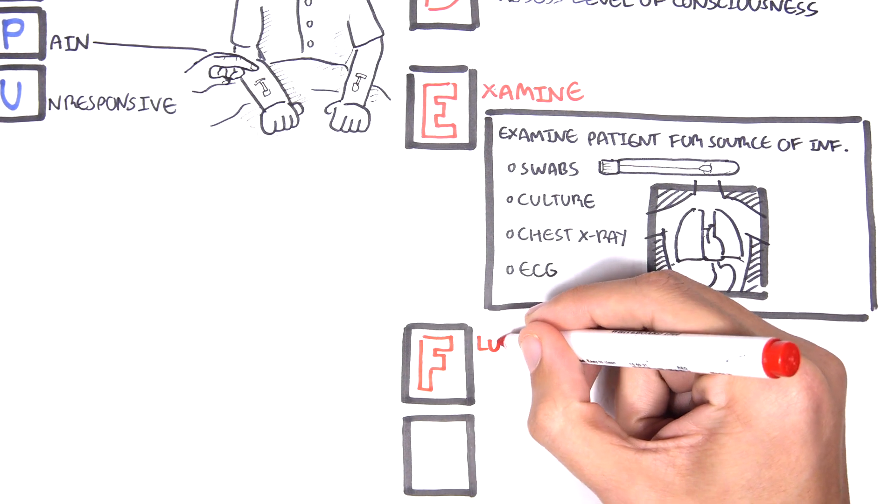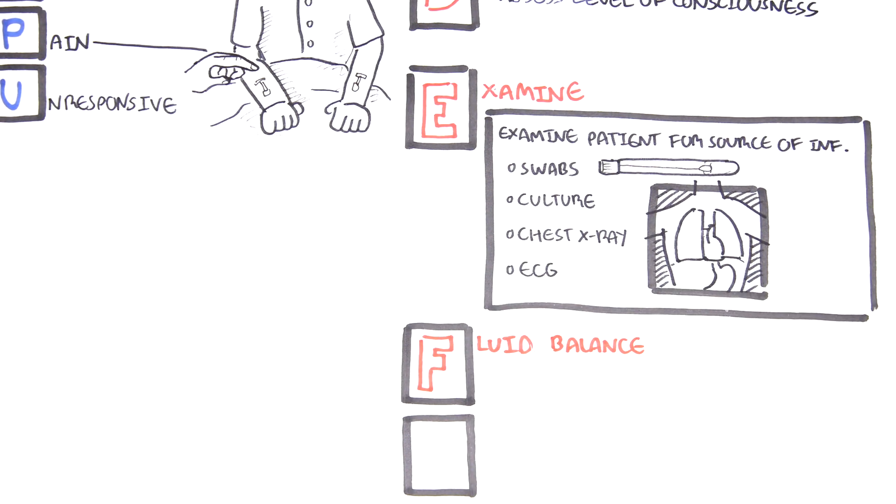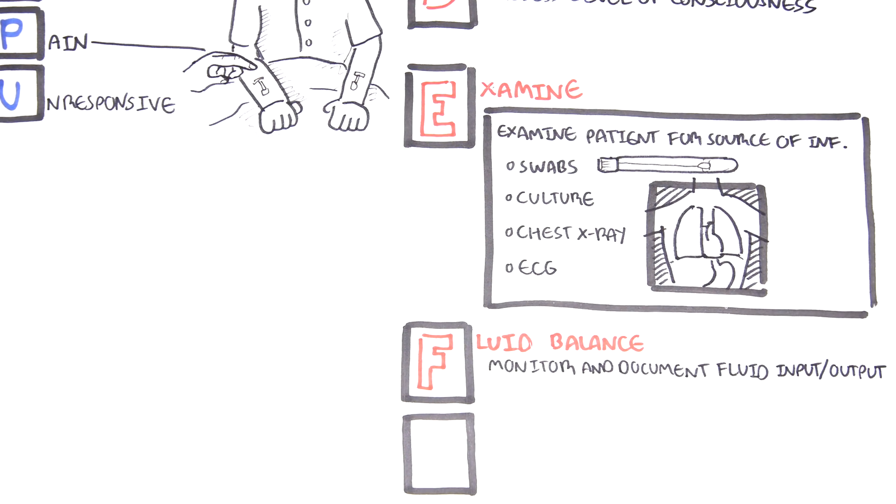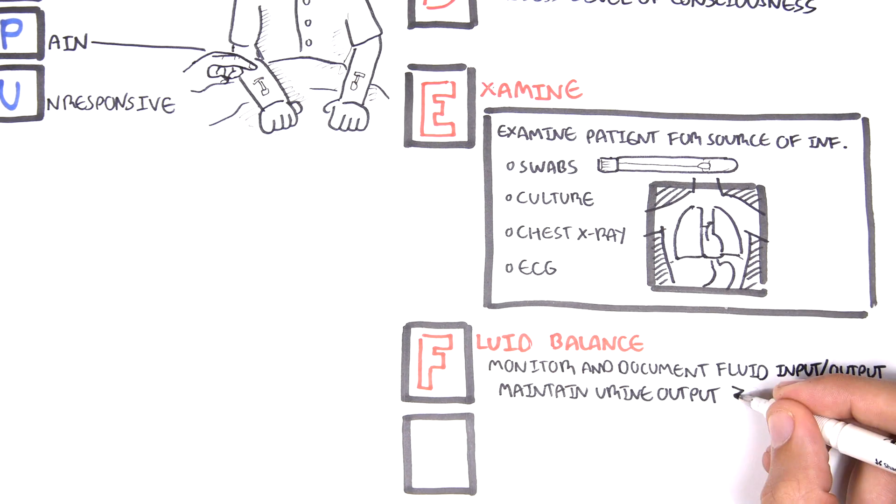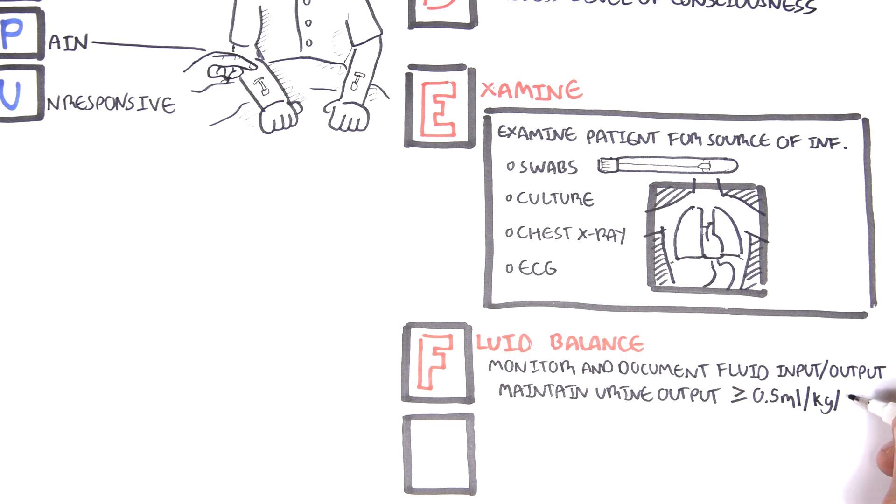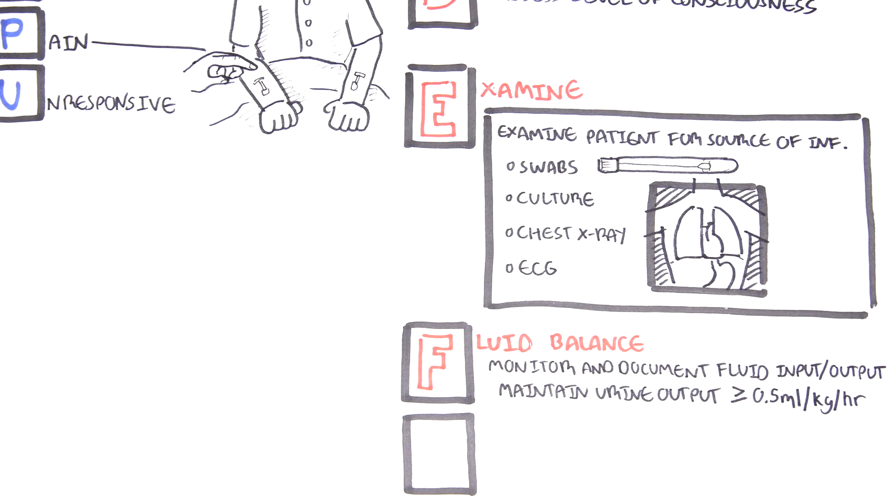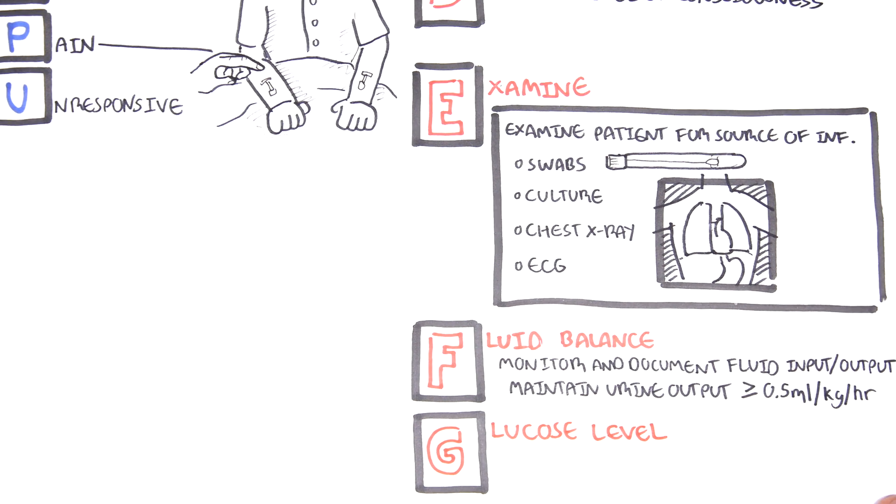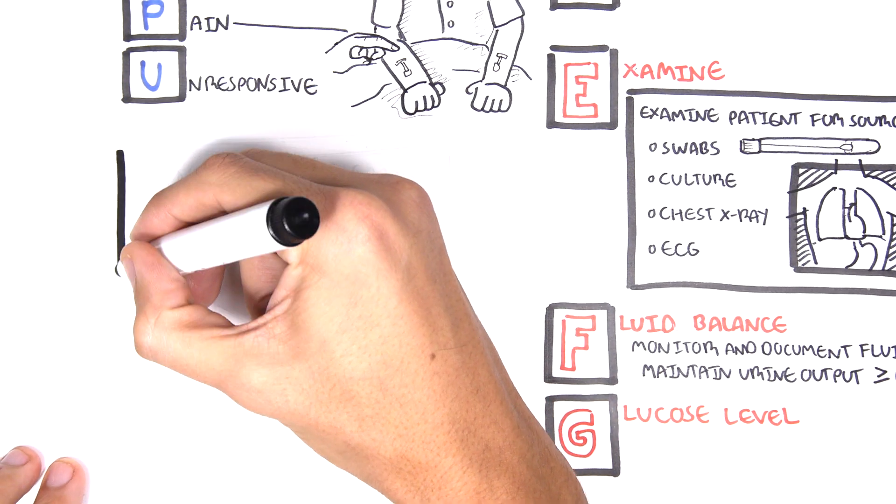F is for fluid balance. Patients with suspected sepsis should be monitored for fluid input and output. A urinary catheter is usually done to assess fluid output. Aim for a urine output of 0.5 milliliters per kilogram per hour for adults. G is for glucose levels, as hypo- and hyperglycemic states can cause ill patients.